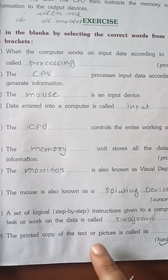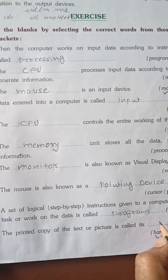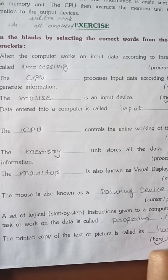The printed copy of the text or picture is called hard copy. What comes out as print, we will call it hard copy.